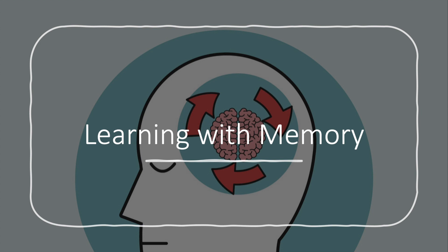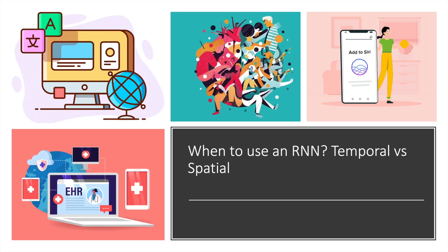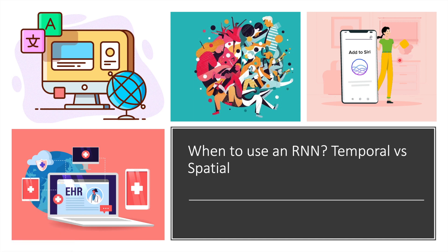Why do we need to use RNNs, and when do we need to use them? According to Lex Fridman from MIT, whenever there is a sequence of data and the temporal dynamics that connect the data are more important than the spatial content of individual frames, RNNs are the way to go. You can see them behind Siri, Google Translate, and applications built based on electronic health records — so many different things.